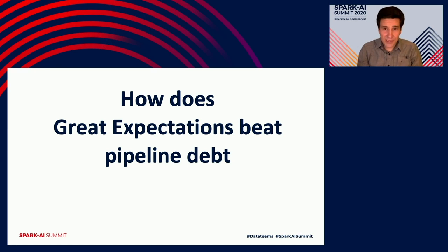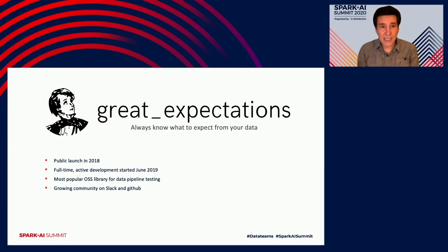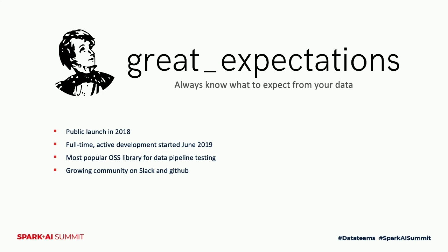Now that we've introduced the monster — pipeline debt — let's talk about how you can beat it and how Great Expectations helps. Great Expectations is an open source project for testing and documenting data that helps fight pipeline debt. It started as a nights-and-weekends labor of love by the two original authors, Abe Gong and James Campbell. It was publicly launched about two years ago, and for the past year it has been under active full-time development backed by a whole team. It is the most popular open source library for data pipeline testing, with a growing and very active community on both GitHub and Slack.